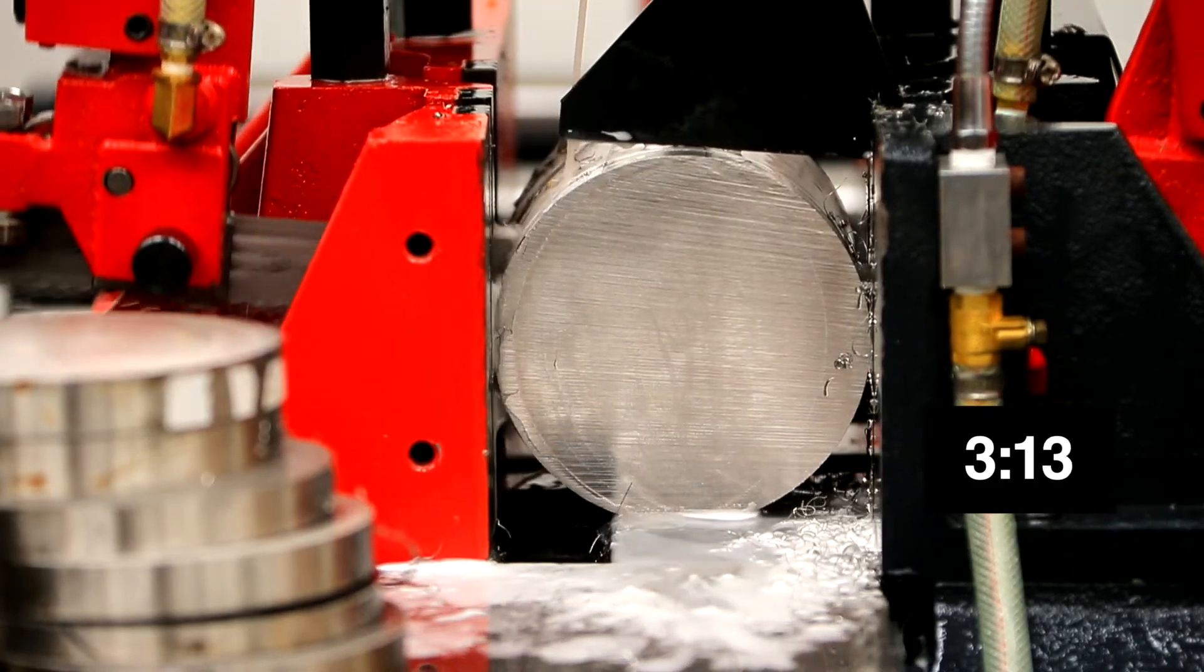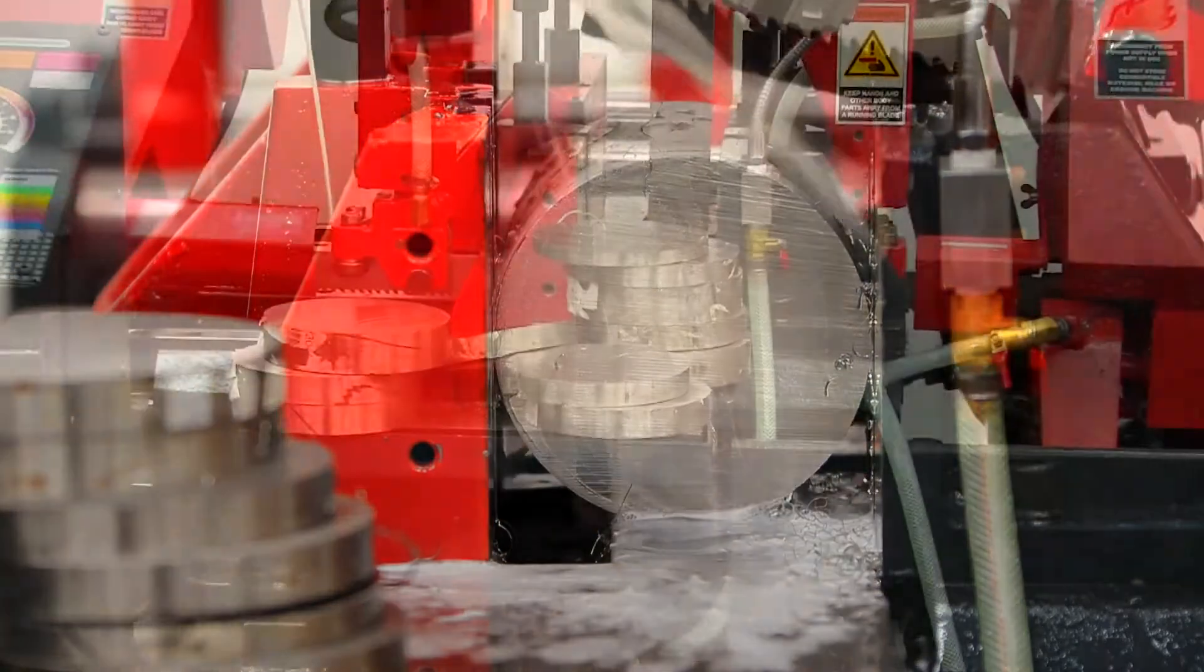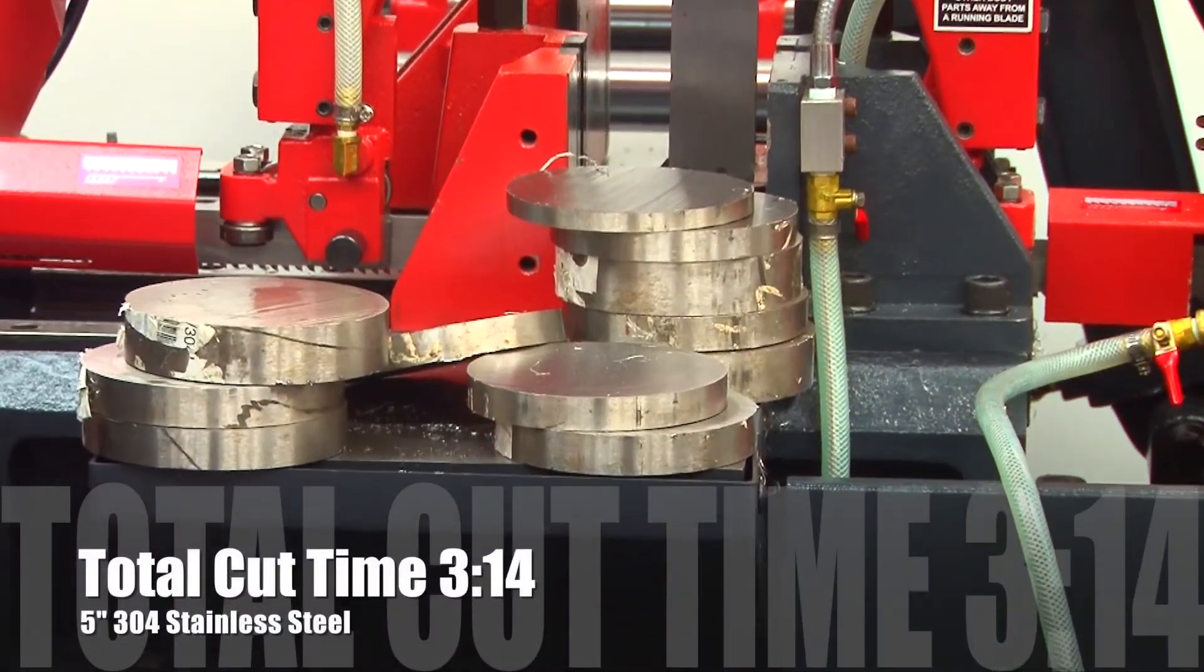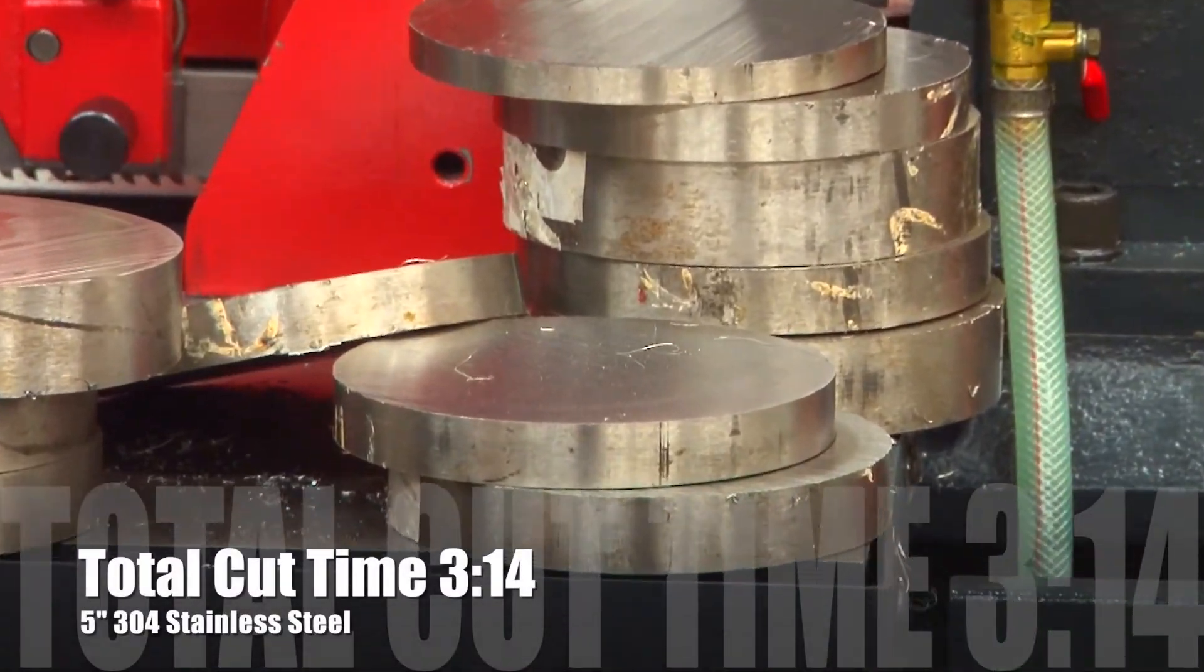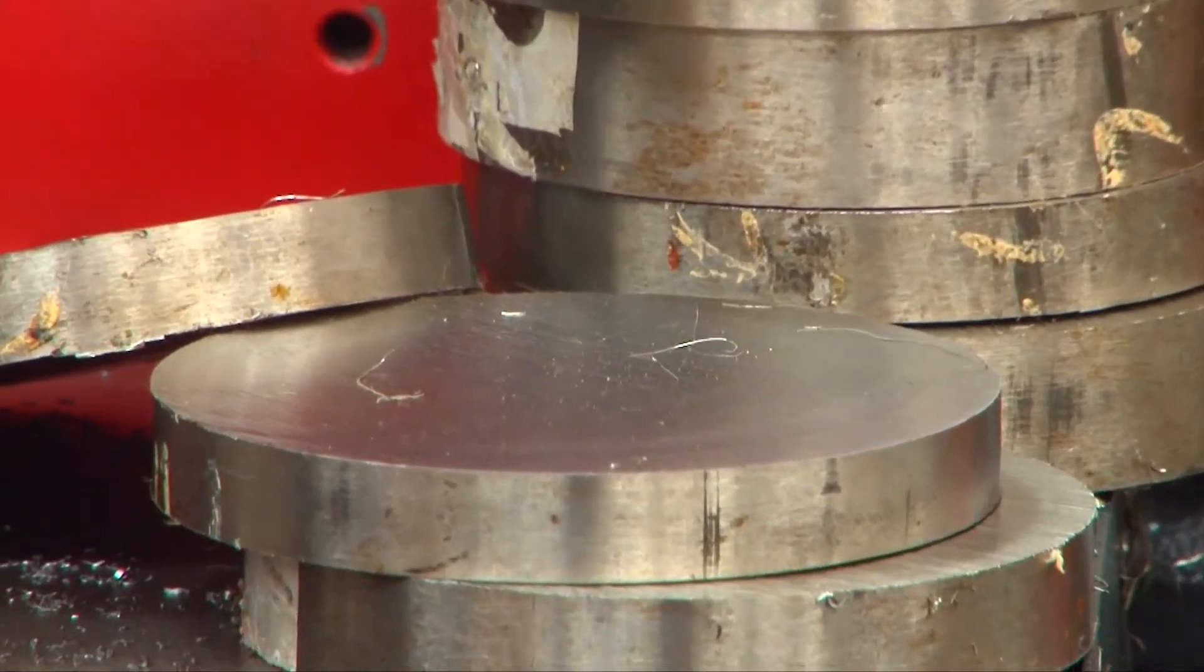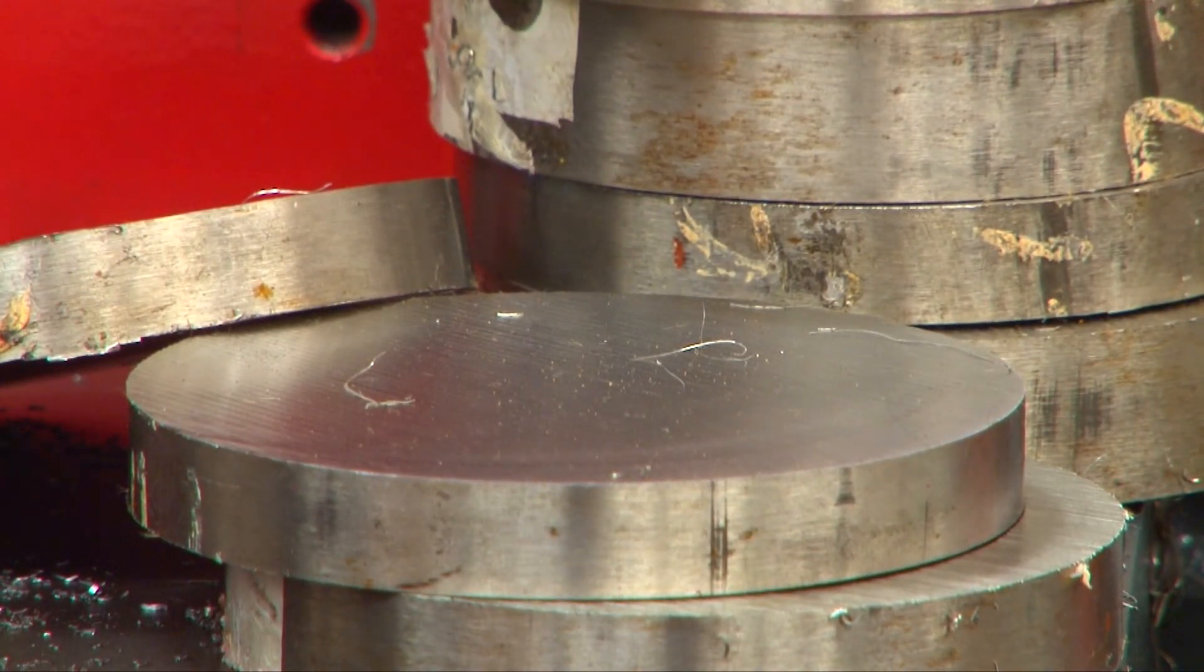This square cut took approximately 3 minutes and 14 seconds. That's 3 to 4 times faster than an M42 bandsaw blade. So, move into the 21st century. Log on to sawblade.com and run lean.